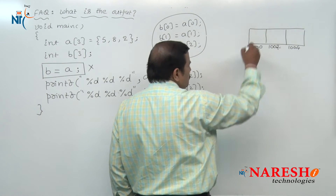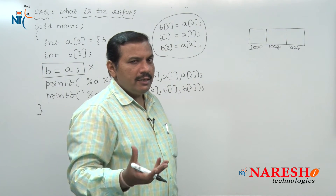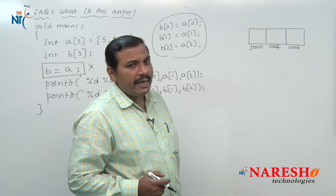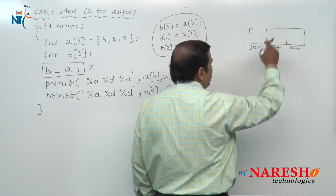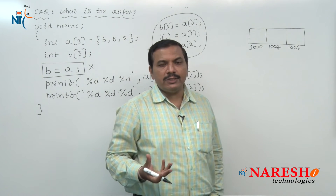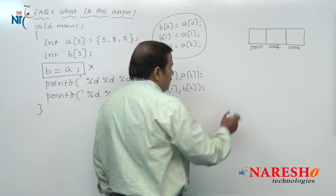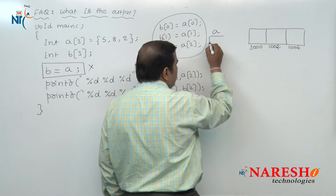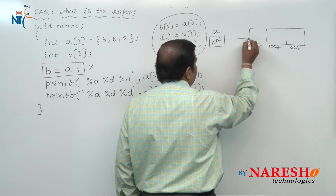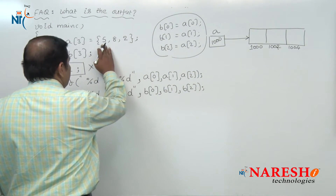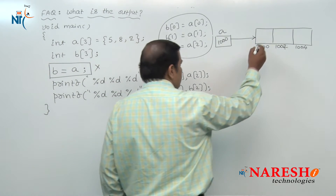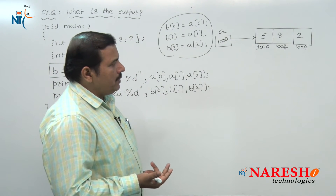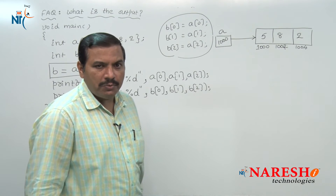The size of each memory location is two bytes. The first byte address is 1000, second byte address is 1001 — though I am only showing the first byte address in the diagram. The second memory location has first byte address 1002, second byte address 1003; similarly 1004 and 1005. The first byte address of the allocated memory block, which is 1000, is automatically stored inside array name A. The initializers 5, 8, and 2 are stored inside the corresponding memory locations.